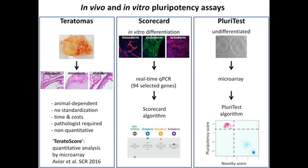Here is a short overview of the different assays we used in our work. The teratoma assay, on the left, involves injecting undifferentiated cells into mice subcutaneously; the benign tumors that form ideally contain derivatives of all three germ layers — ectoderm, mesoderm, and endoderm.